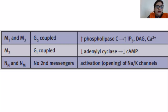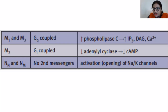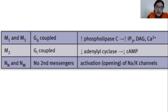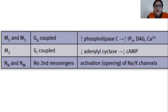M1 and M3 increase phospholipase activity. Muscarinic receptors are G protein-coupled receptors. Nicotinic receptors focus on opening and closing of sodium and potassium channels, dealing with action potentials. But muscarinic receptors are more concerned with the actions of G protein-coupled receptors, known as GPCRs.